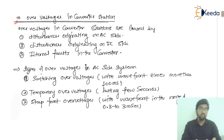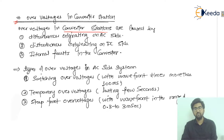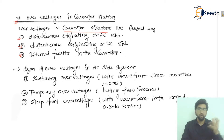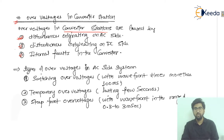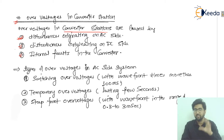We have already talked about the over-current in the converter stations. Now we are talking about the over-voltages in the converter stations. These are caused by three points. The first point is disturbance originating on the AC side — if any disturbance or fault condition arises on the AC side, there may be chances of over-voltages. The second point is disturbance originating on the DC side — if there is a disturbance occurring on the DC side, that may also cause over-voltages.